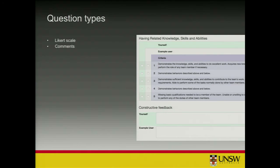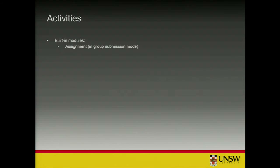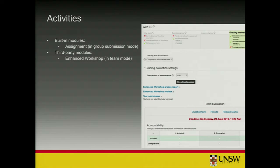The current plugin types: there are two question types — the Likert scale (zero to ten, one to five, or whatever range you want), and the comments type, which doesn't provide a numeric value but lets students enter feedback that peers can see. Coming in future versions: a split-100 where you divide a pie among teammates, and a contribution matrix — a grid of checkboxes indicating who contributed what. For activities, the only built-in Moodle activity that supports group submission is the assignment plugin. There's also an in-house version of Workshop that supports group submission, available on the NetSpot GitHub, and the TeamEval-compatible version is on Morgan's GitHub.